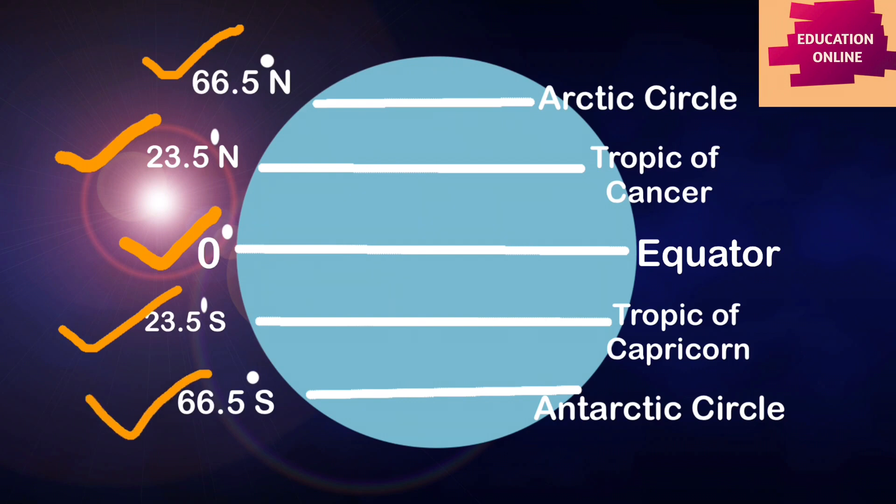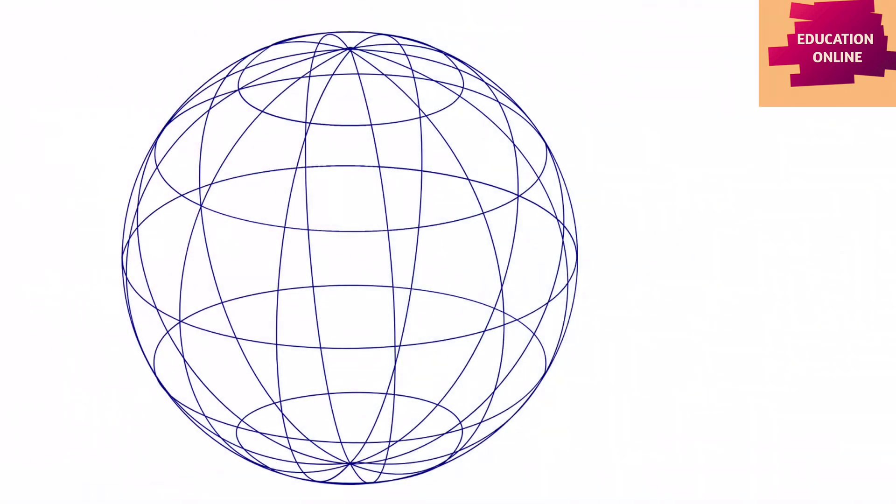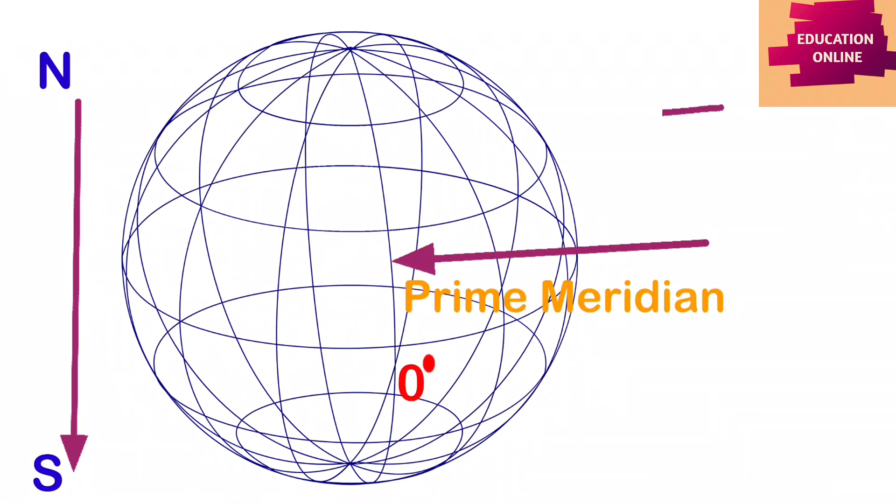Next we move to the meridians of longitude. The vertical lines on the globe are called the meridians of longitudes. These imaginary lines run from the north pole to the south pole, crossing the parallels of latitudes. The important longitudes are the Prime Meridian at 0 degree and the International Date Line at 180 degrees.